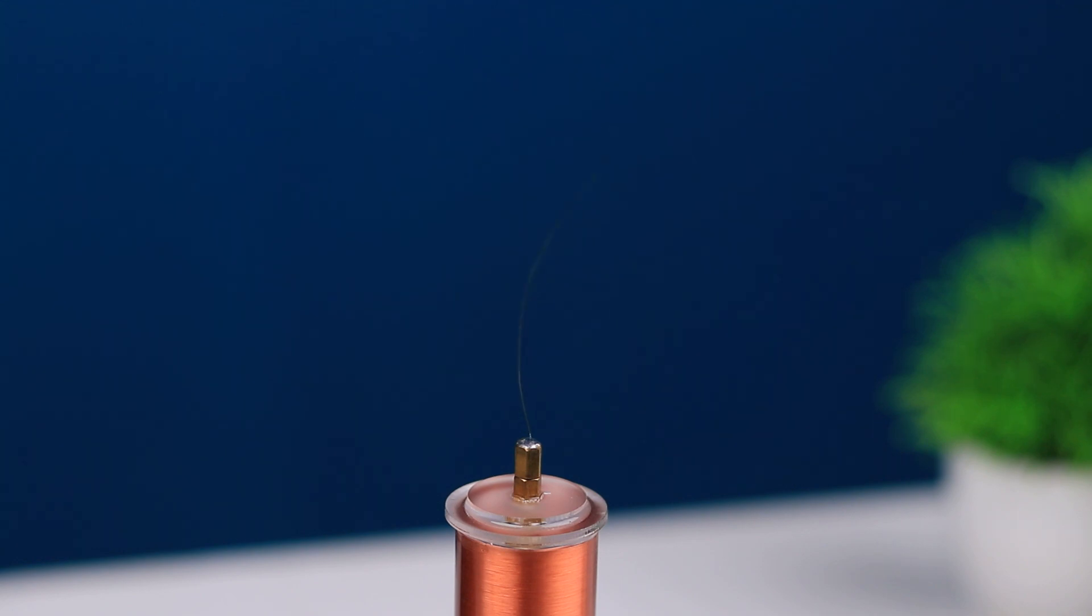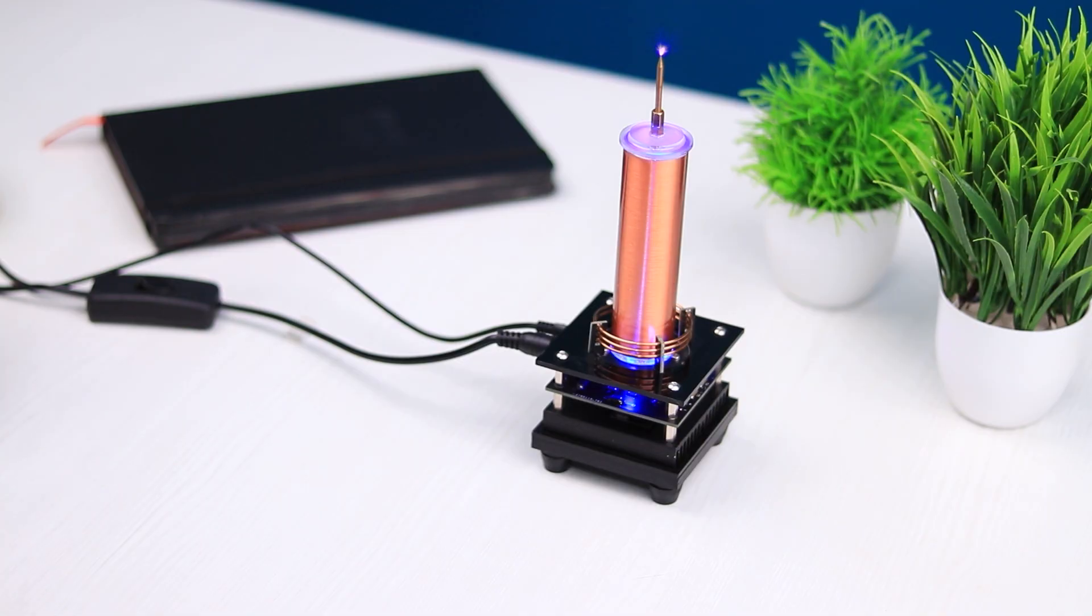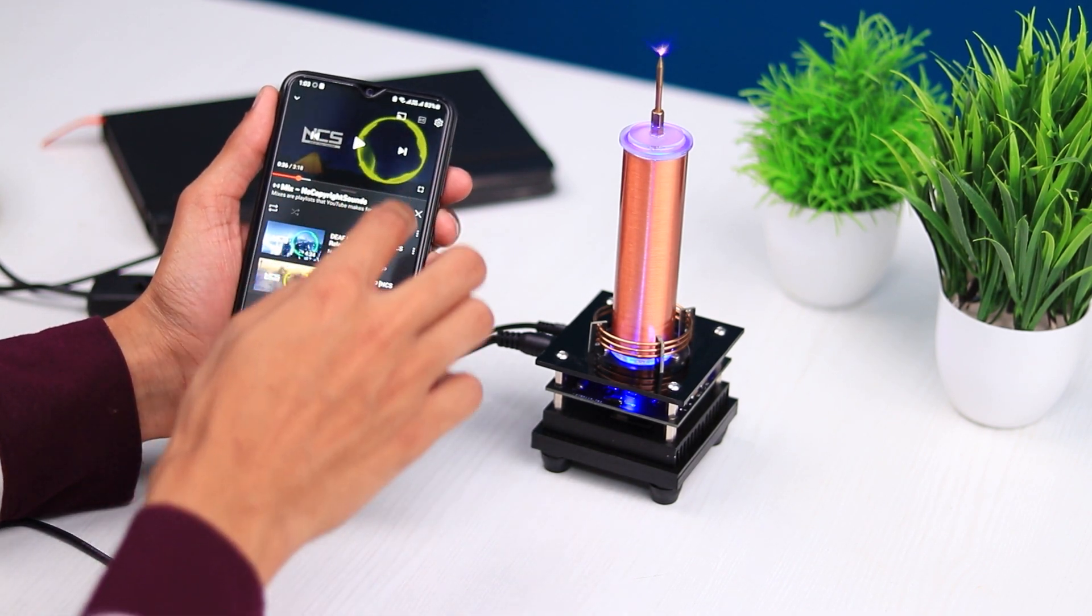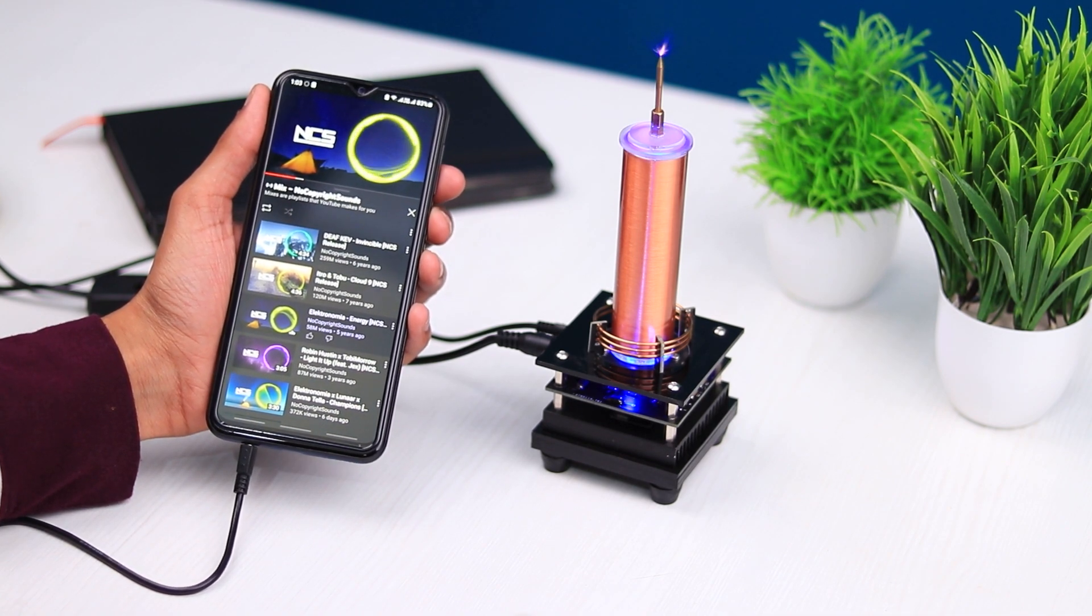It again starts shaking when we turn on the Tesla coil. Remember I told you at the beginning we can listen to music with this Tesla coil. Let me show you how we can listen to music from this. You just have to attach one end of the audio line to the Tesla coil and the other end to a music output device like your computer or smartphone. As I hit the play button, you can listen to sound coming from it.